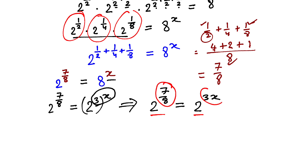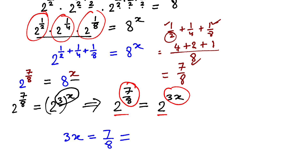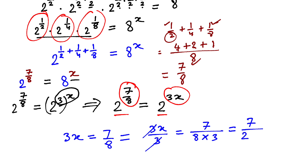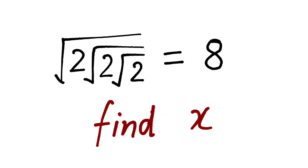Now the bases are the same, so we can equate the exponents. This gives us 3x = 7 by 8. Dividing both sides by 3, we get x = 7 by 8 divided by 3, which is 7 by 24. So the answer is x = 7 by 24. You can replace x in the original expression with 7 by 24 and that's the correct answer.